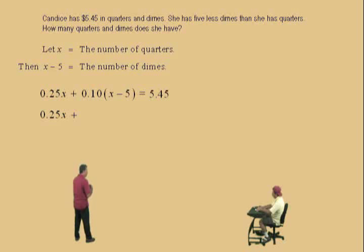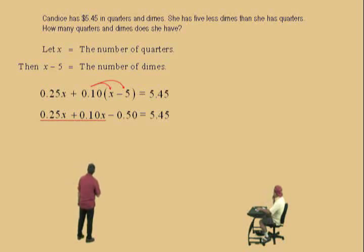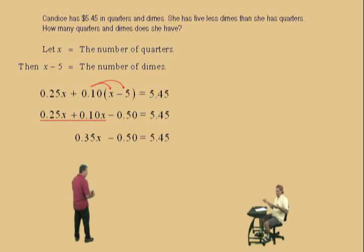So, 0.25 times x, what do we have to do here, Charlie? The distributive property. That's right. 0.10 times x is 0.10x. 0.10 times 5 is what, Charlie? 0.50, that's right, and all this has to equal 5.45, the 5 dollars and 45 cents. Here we go, Charlie. What do we do next? Combine like terms. That's right. And, 0.25x plus 0.10x is how much, Charlie? 0.35x. Very nice there, Charlie. 0.35x. Bring down our work.